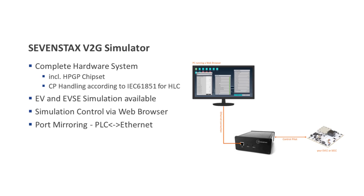Last but not least, the 7Stacks V2G Simulator offers the bridging of the powerline interface to the Ethernet interface so that it can forward the traffic on the control pilot to the connected PC. You might run our GreenShark packet detector on the PC and analyze the communication in real time or capture the traffic. If you aren't aware of 7Stacks GreenShark, I will put a link to another video showcasing the GreenShark into the description below.